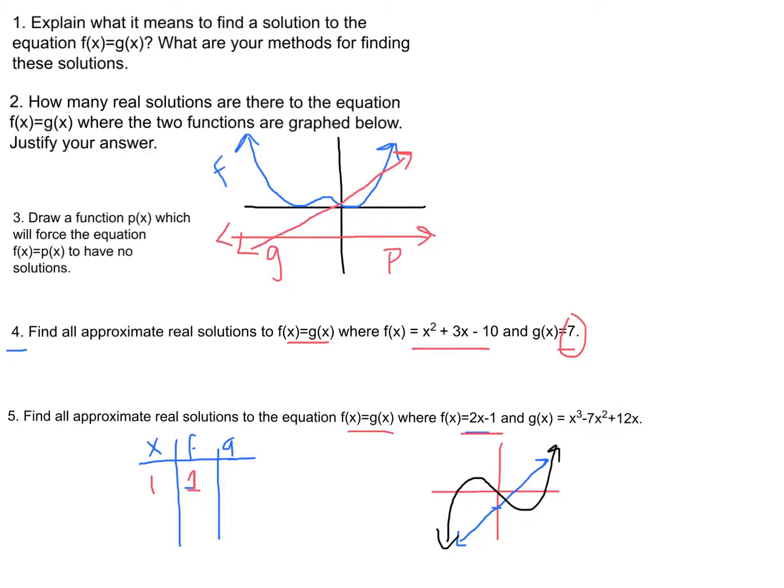Which is 1 minus 7 is minus 6. Plus 12 is going to be positive 6. So I can see just right off the bat that when x is 1, f and g are not equal.